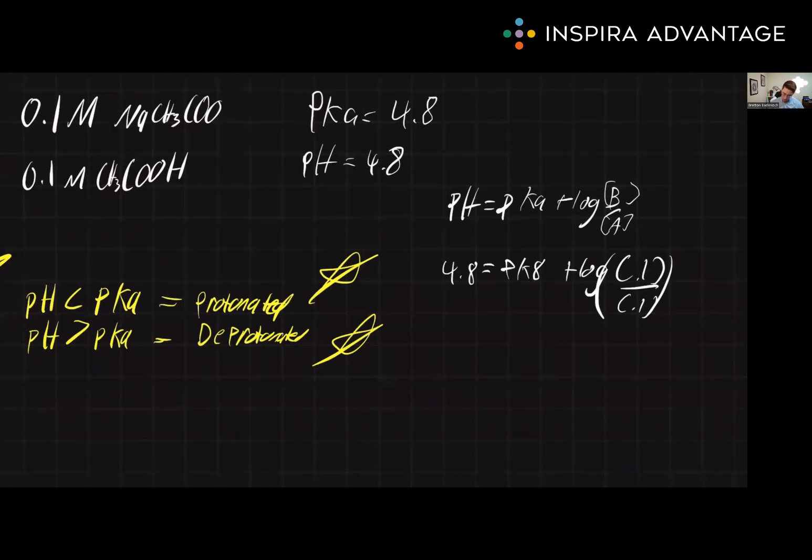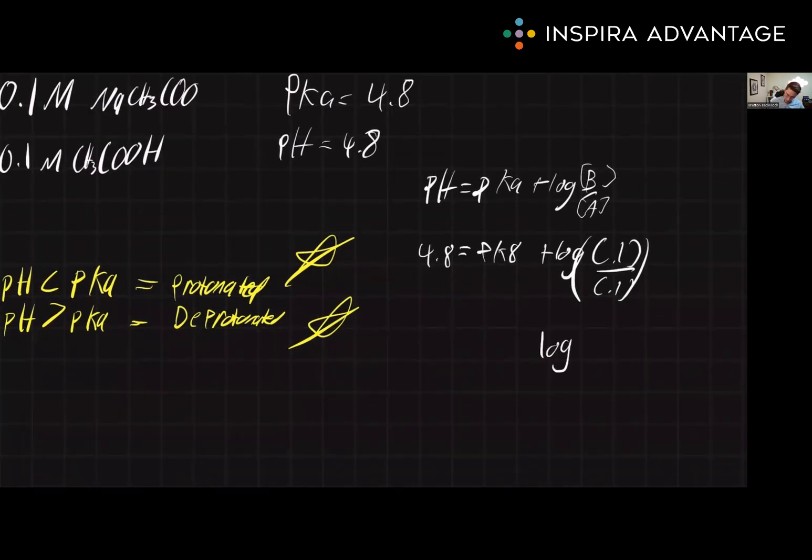So we can rewrite this as the log of just 1 because 0.1 divided by 0.1 is 1. And we know that the log of 1 is just 0. So if 0 plus our 4.8 from the pKa, which I'll write up here as well, equals the 4.8 of the pH. So now we'll subtract on over.